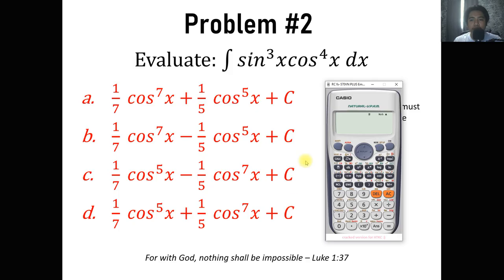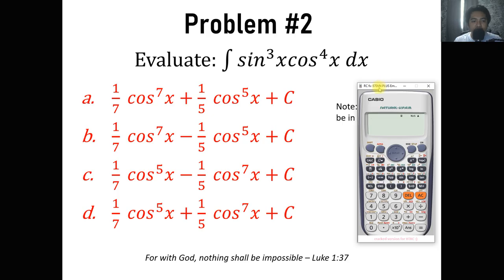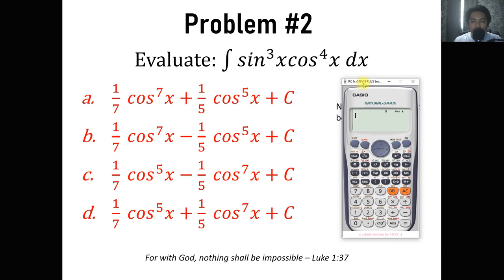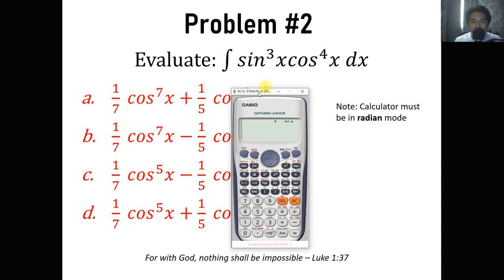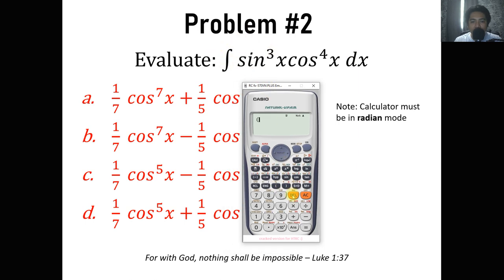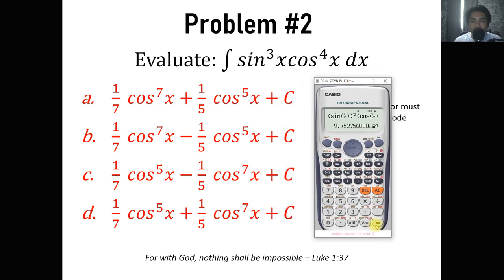Problem number 2: the integral of sine cubed of x times cosine raised to 4 of x dx. To input sine cubed of x, type (sin x) raised to 3, multiplied by (cos x) raised to 4. We solve by substituting x equals 0.1 and let the calculator compute the value. Store it to A for comparison, then go to the choices.